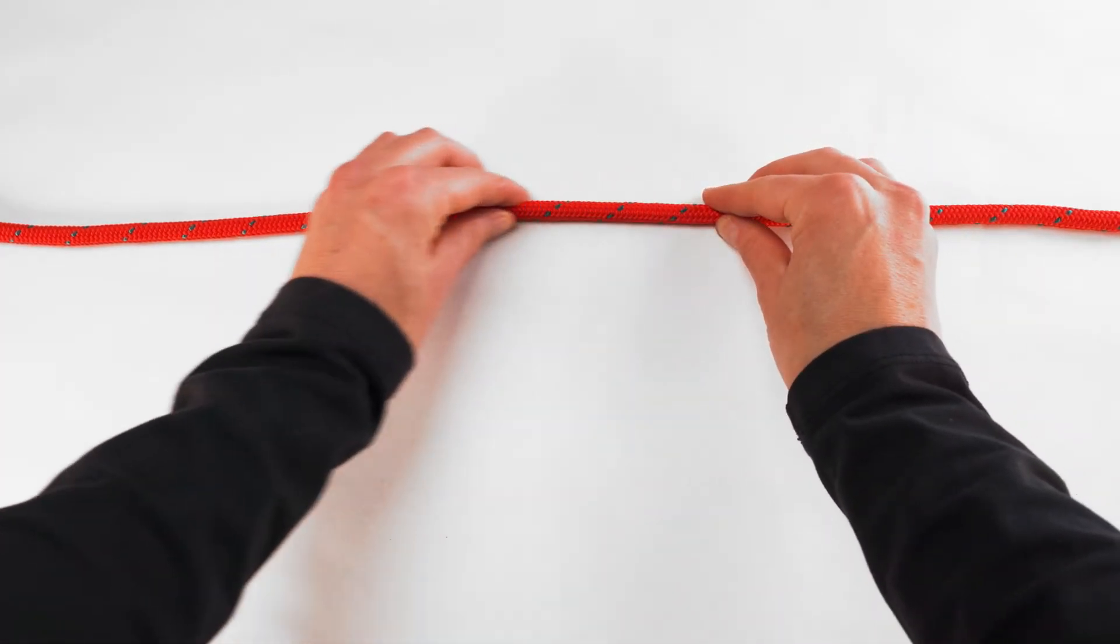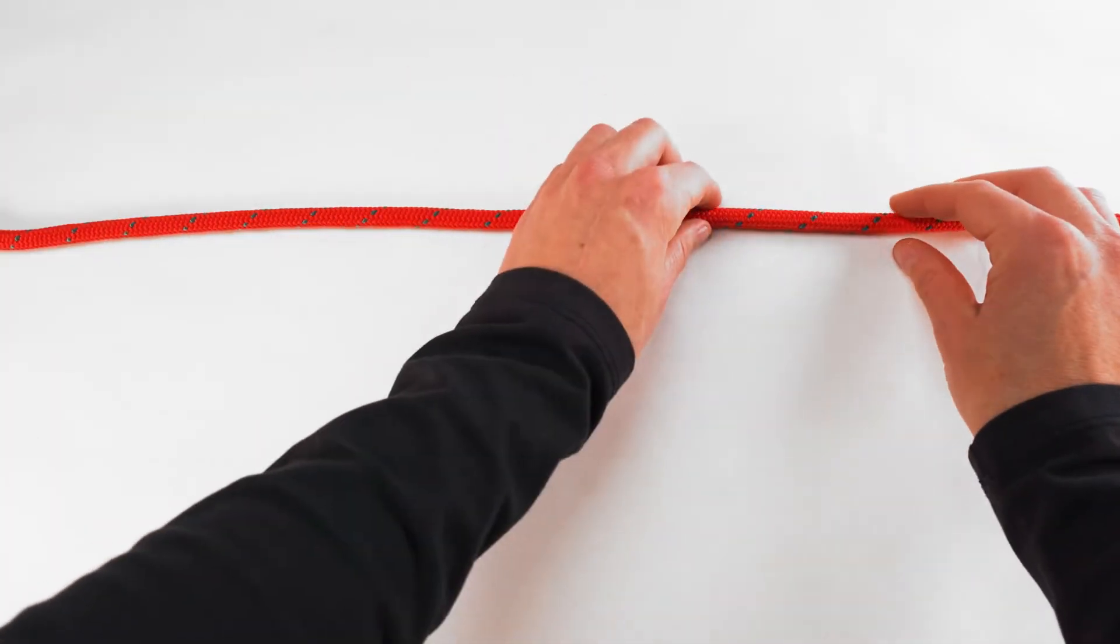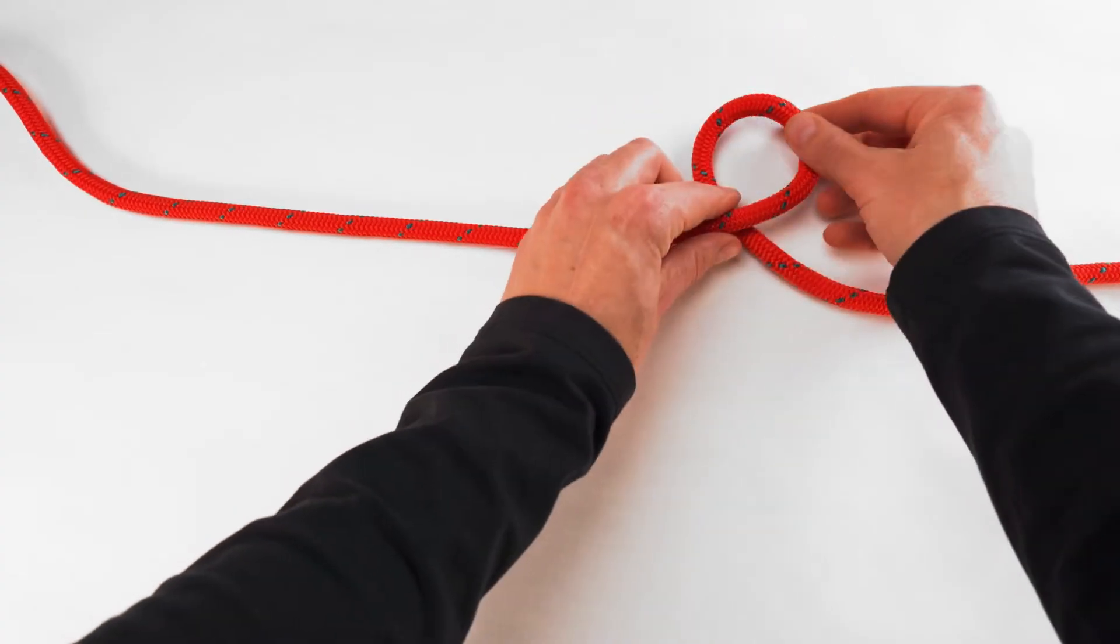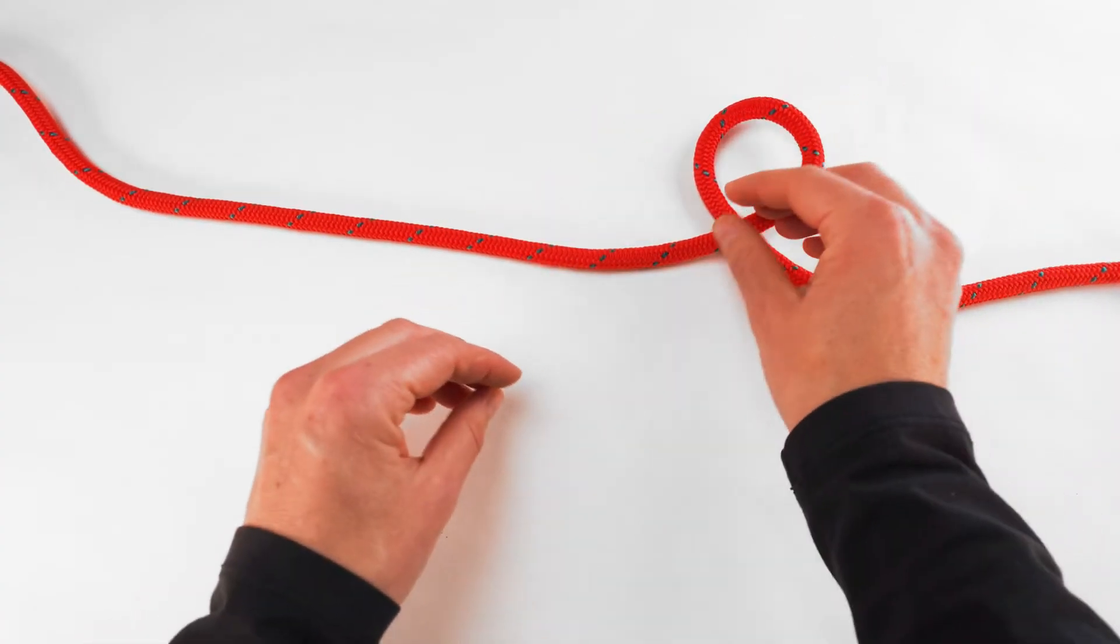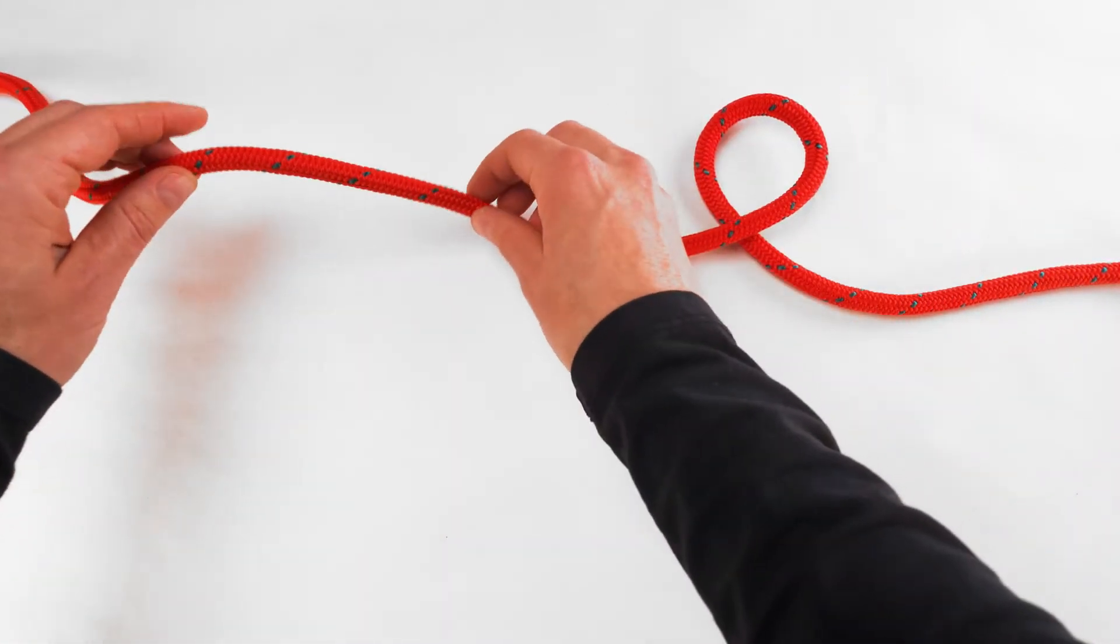Clove hitch. To tie a clove hitch, create a loop with the working end on top. Create a second loop ensuring the working end is again on top.